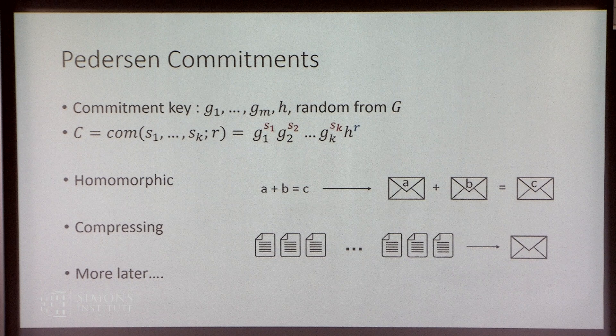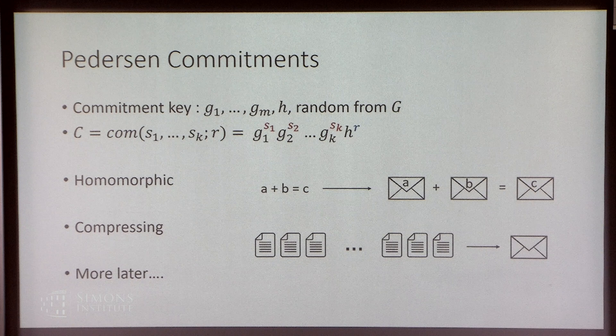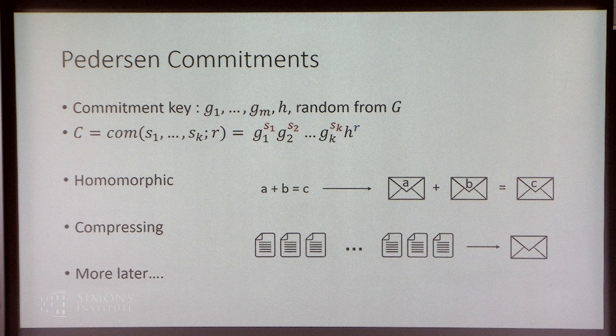In the discrete log setting, we often use Pedersen commitments. Pedersen commitments are really easy: the commitment key is just lots of random group elements from a group G where the discrete log problem is hard. To commit to some messages s_i with some randomness r, you just perform a multi-exponentiation with all the message elements and the group elements. These are really nice commitments — they're homomorphic and highly compressing, taking lots of messages to a single group element.